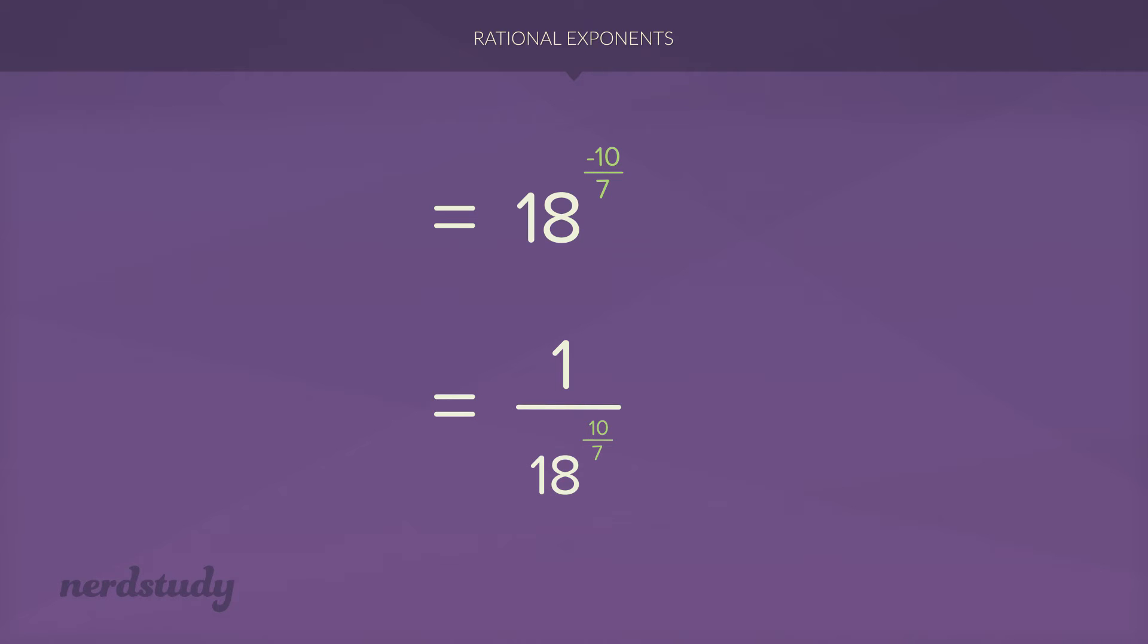Great. Now we're almost finished, but we did learn something today. We can put that 18 to the exponent 10 over 7 in a different form. Do we need to? Maybe not. But if our teacher wants us to, then maybe we should. So in this situation, we have 1 over 7th root of 18 to the exponent 10.